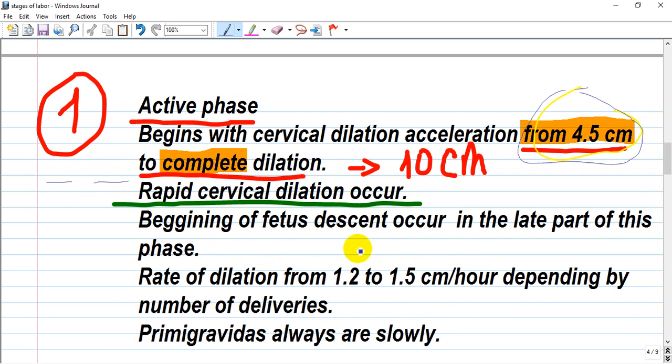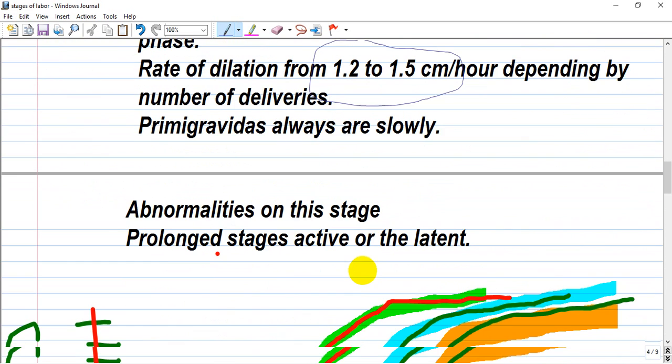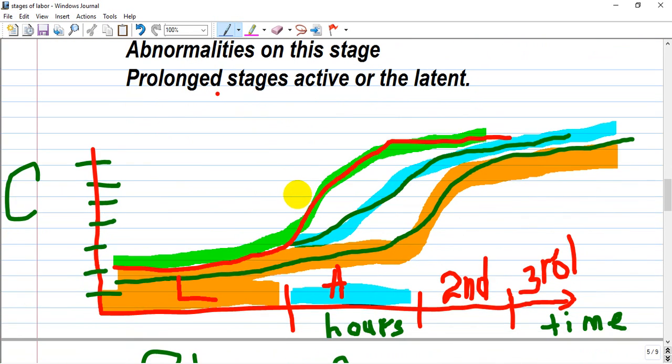Rate of dilation is 1.2 to 1.5 centimeters per hour, depending on the number of deliveries. Primigravidas are always slower. Abnormalities of this stage include prolongation—called prolonged active phase or prolonged latent phase.